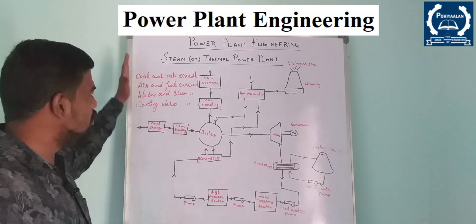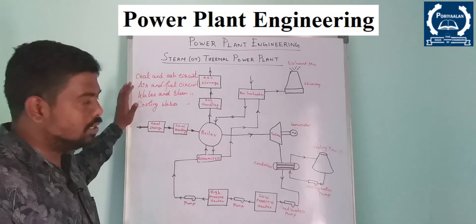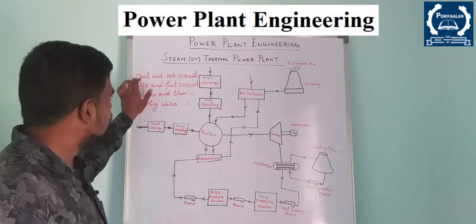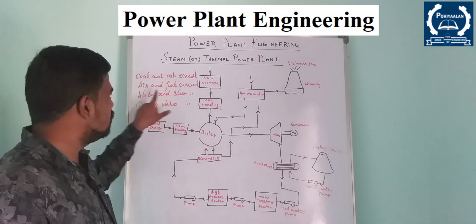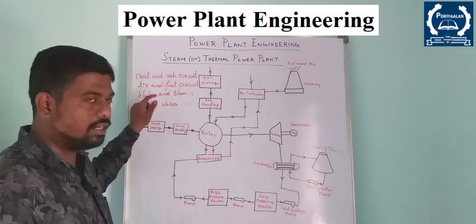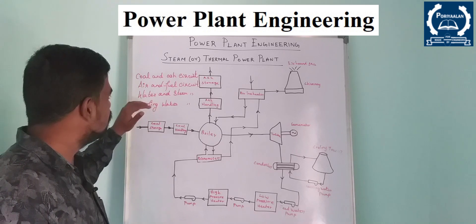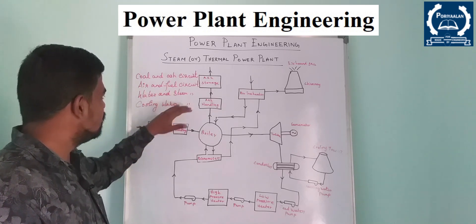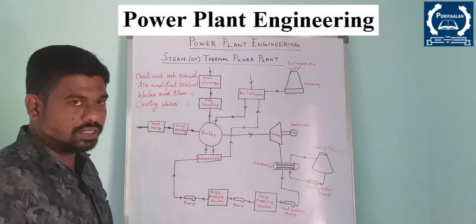We will talk about 4 circuits. The first circuit is the coal and ash circuit. The second is the air and fuel circuit. The third is the water and steam circuit. The fourth is the cooling water circuit.